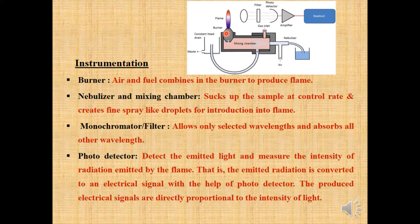The radiation from the flame passes through a lens and to the filter. The role of the filter is to allow only the specific wavelength and to absorb all other wavelengths. Next, it is passed through the photo detector, which detects the emitted light and measures the intensity of radiation emitted by the flame. The emitted radiation is converted into an electrical signal with the help of the photo detector. Next, it is amplified, processed, and passed through the readout.